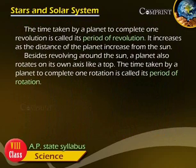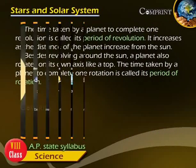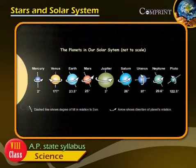The time taken by a planet to complete one revolution is called its period of revolution. It increases as the distance of the planet increases from the Sun.